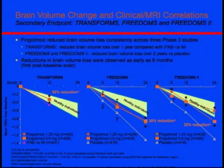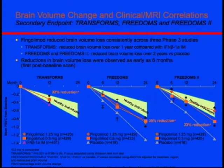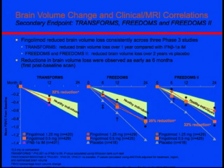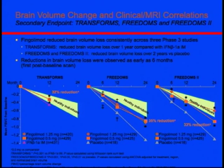Based on the three pivotal trials leading to fingolimod's approval — TRANSFORMS, FREEDOMS I, and FREEDOMS II — there is a dramatic robust effect on brain volume loss. TRANSFORMS compared fingolimod high and low dose to Avonex, showing a 32% reduction in brain volume loss, almost as good as healthy controls. FREEDOMS I and II showed a consistent 33–35% reduction compared to placebo in terms of preserved brain volume.